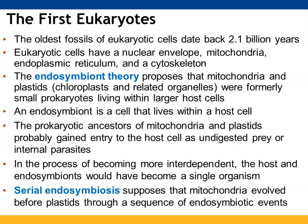The oldest fossils for eukaryotic cells date back about 2.1 billion years ago. Eukaryotic cells have a nuclear envelope, mitochondria, endoplasmic reticulum, and a cytoskeleton. We talked about the endosymbiont theory back when we discussed photosynthesis and respiration with cell structure.